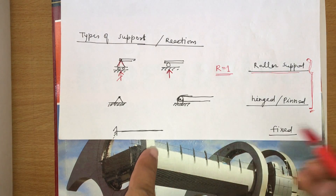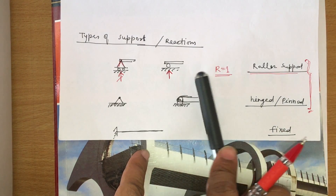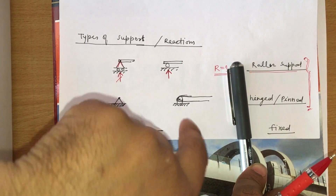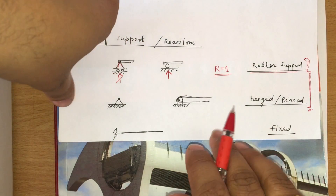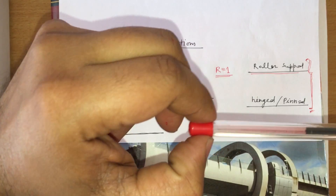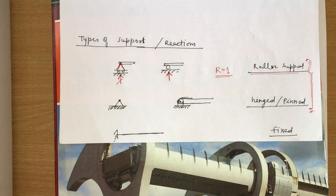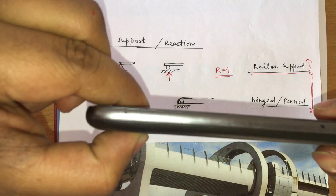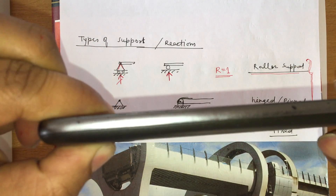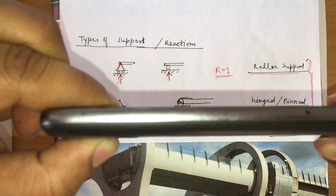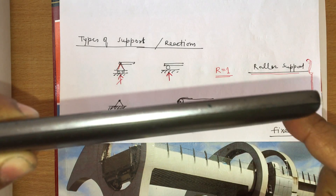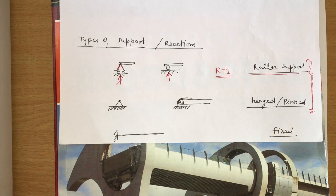A roller can simply roll — only a vertical reaction is produced, not horizontal. A hinge, on the other hand, can be connected such that it can transfer forces in any direction. However, moment cannot be transferred through a hinge — only horizontal and vertical forces can be transferred.